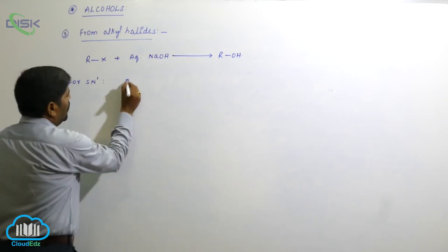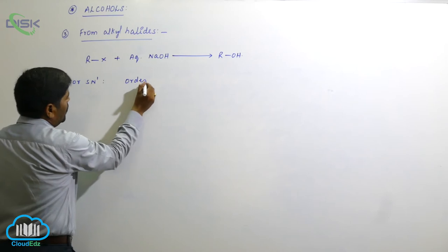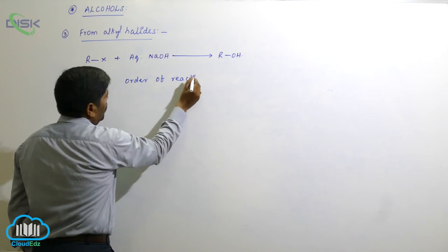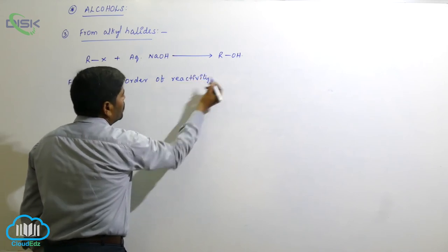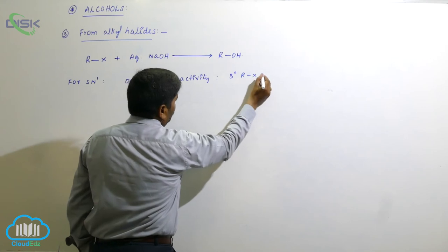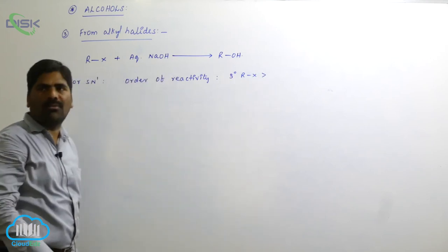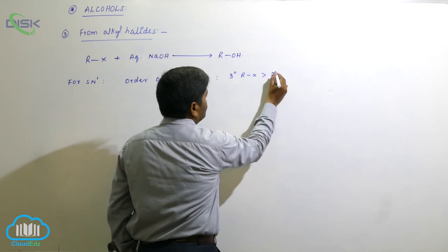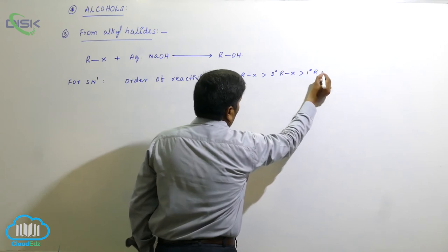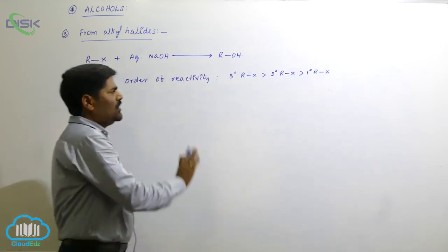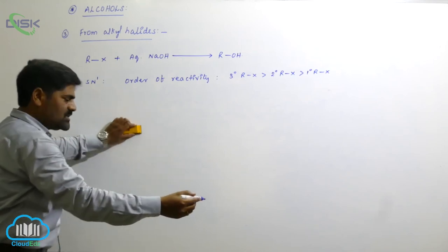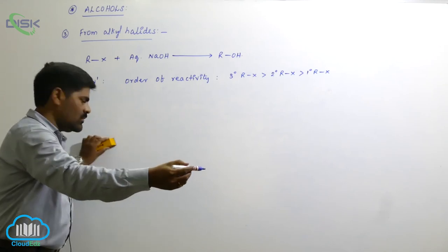For the SN1 reaction, the order of reactivity is: tertiary alkyl halides are most reactive because they form a stable carbocation, followed by secondary alkyl halides, then primary alkyl halides, and methyl halide is least reactive — this is for SN1.